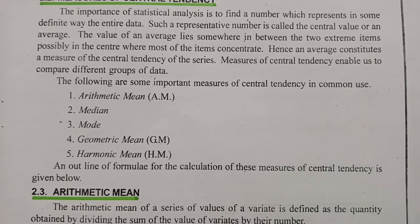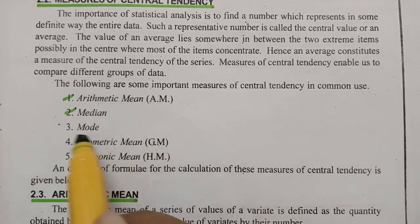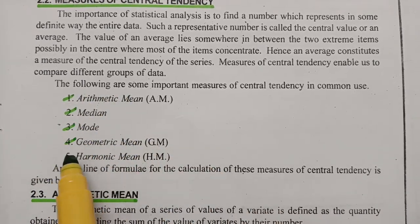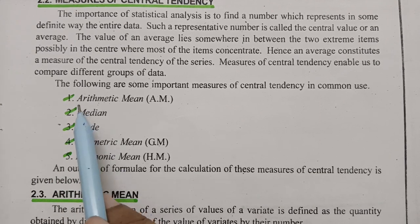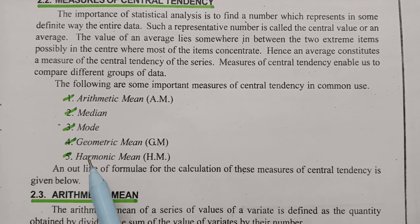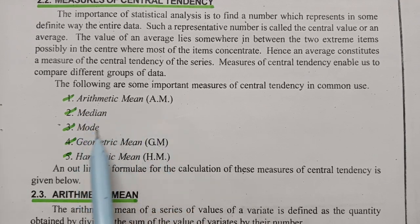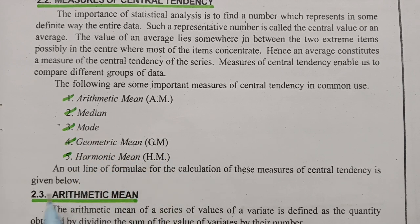The following are the five important measures of central tendency in common use: the first one is the arithmetic mean (AM), next is the median, then the mode, geometric mean (GM), and the harmonic mean (HM). These are all five measures of central tendency.